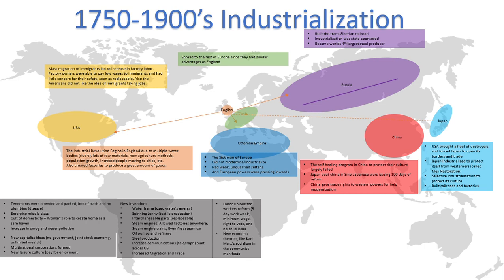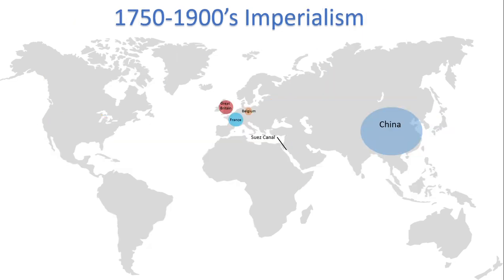Due to the injustices caused by a purely capitalist society, new economic theories like Karl Marx's socialism in the Communist Manifesto outlined these flaws and tried to give a solution. Karl Marx believed that the bourgeoisie — the upper class — was getting richer and richer on the backs of the lower classes.